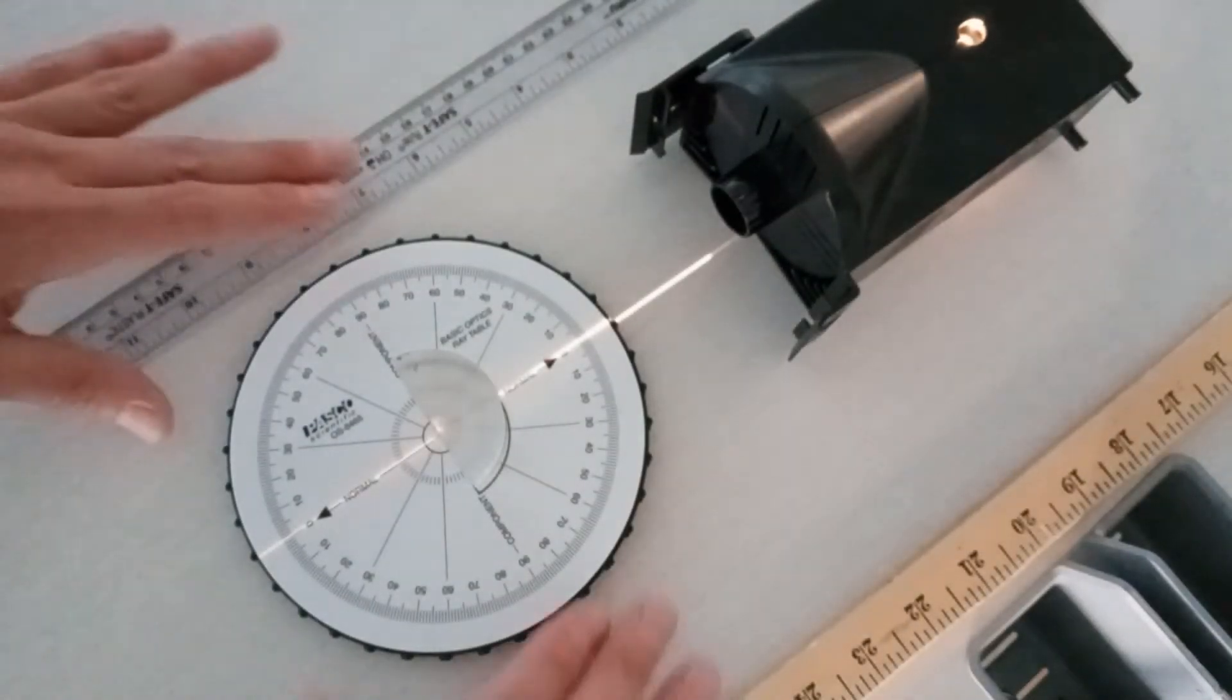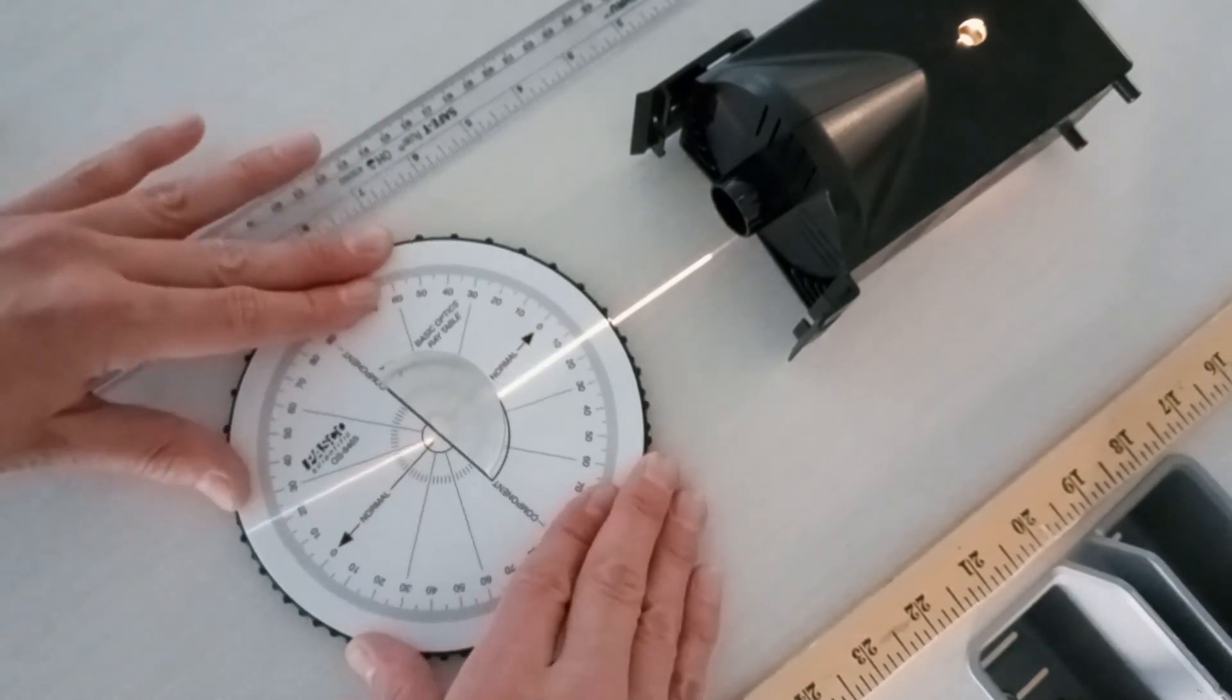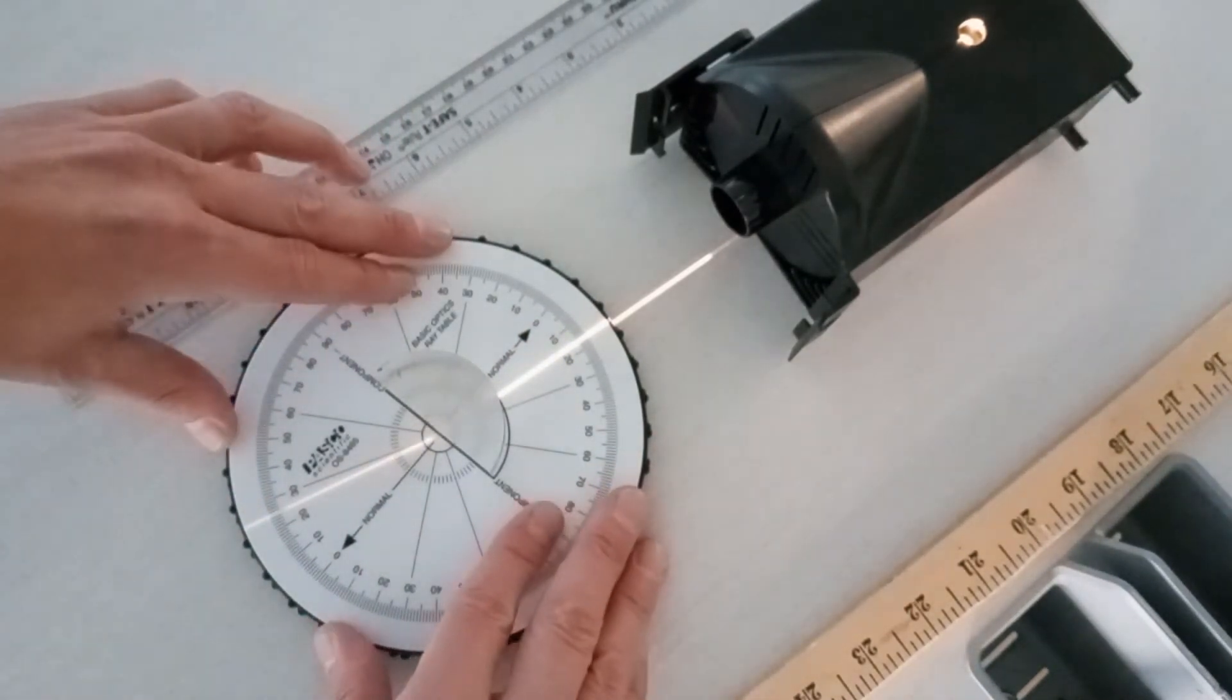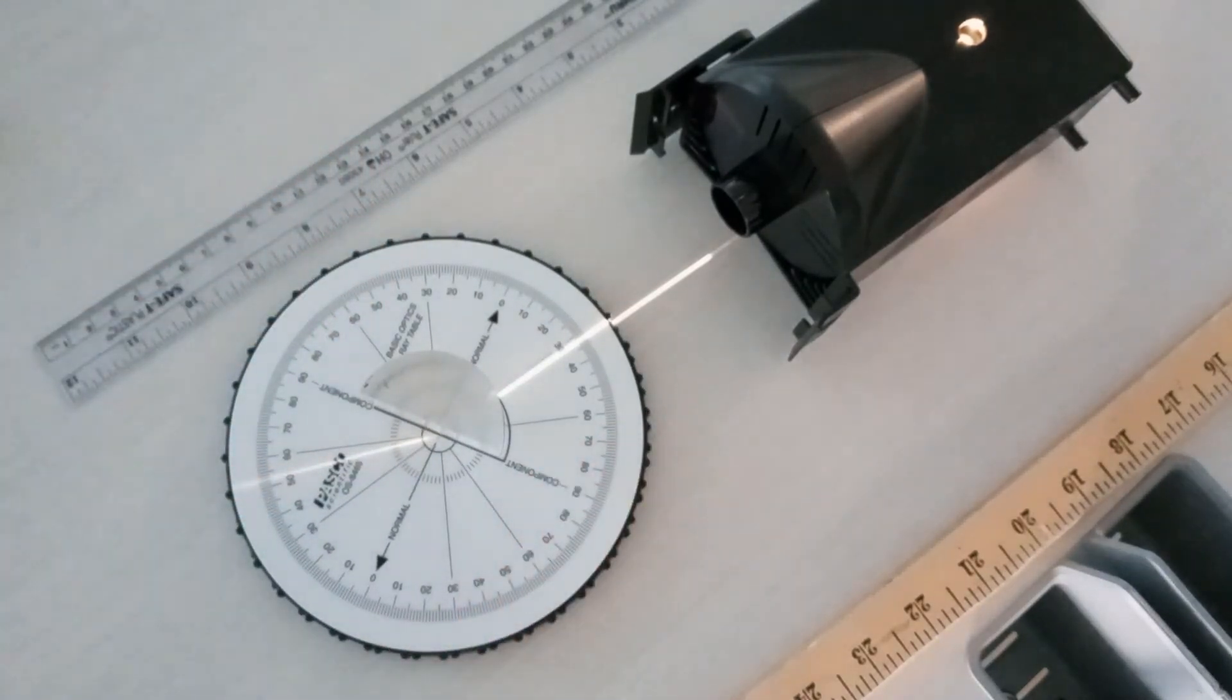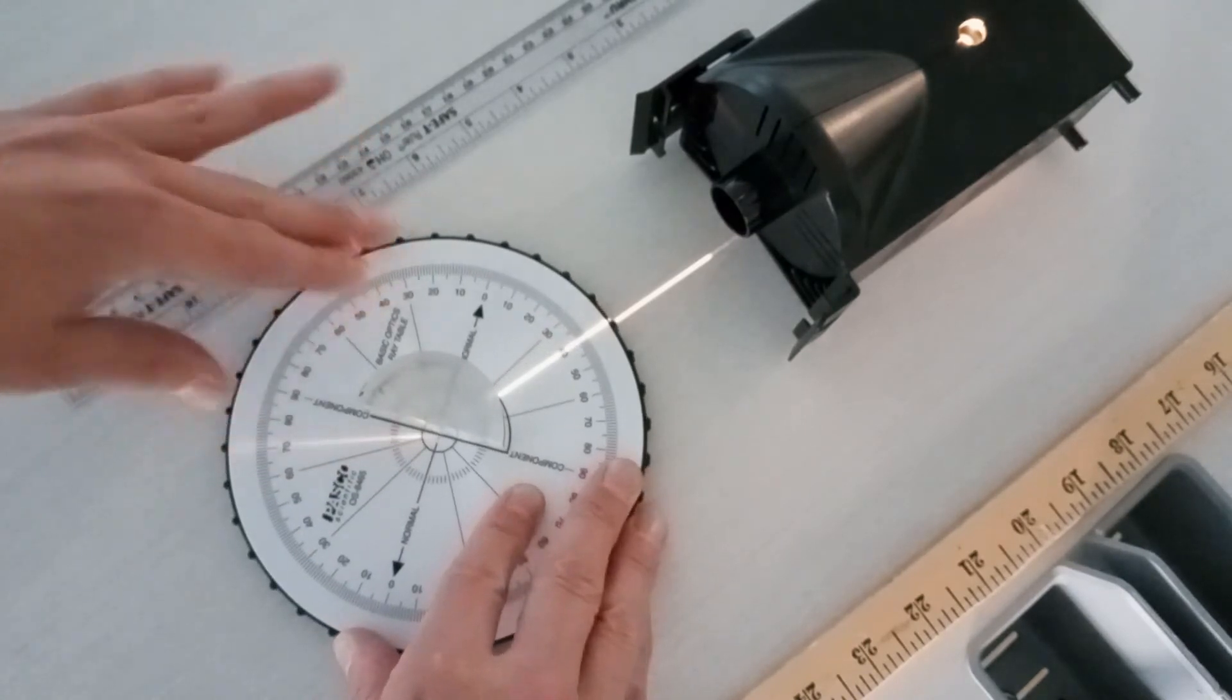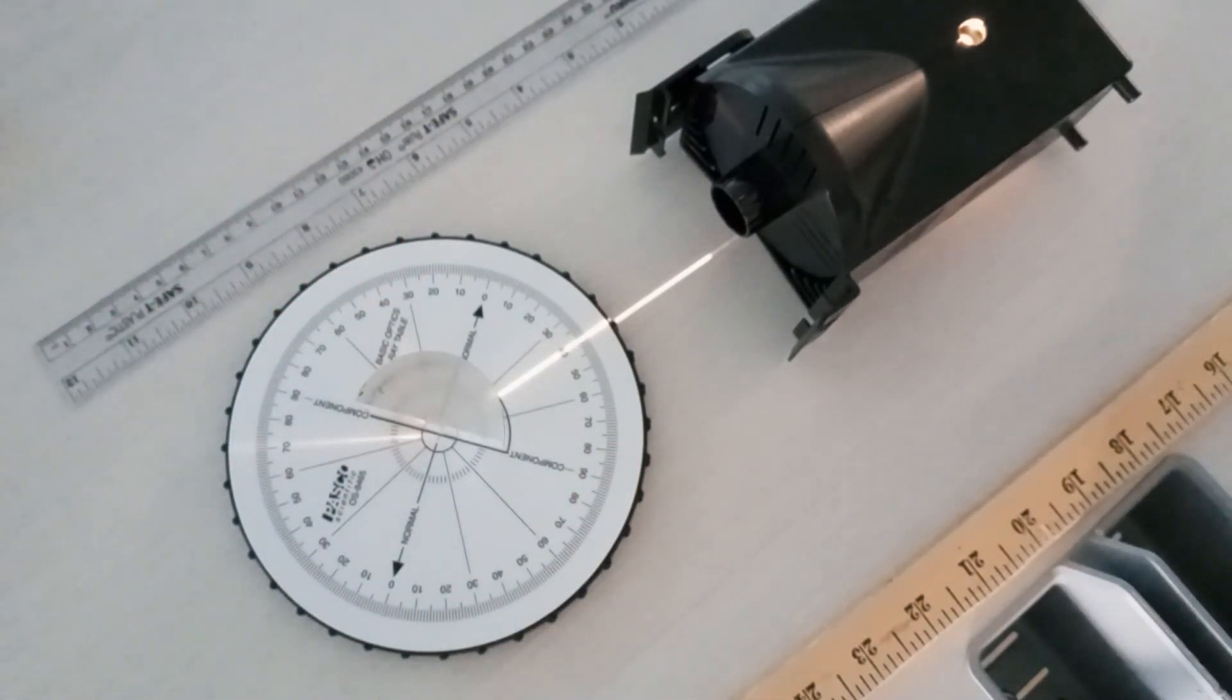If we turn the half circular lens around, the light beam will now be refracted when it moves from the glass into the air. Because the index of refraction decreases, when it reaches a certain angle, the light beam will be entirely reflected within the glass. This incident angle is called the critical angle.